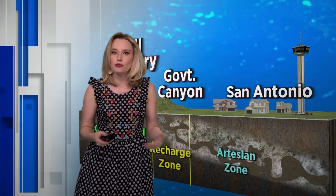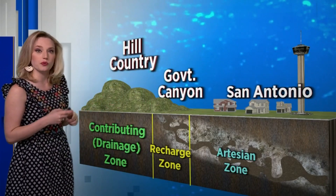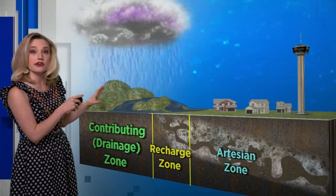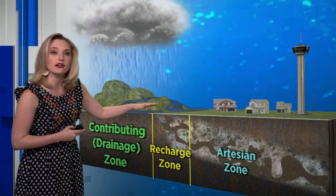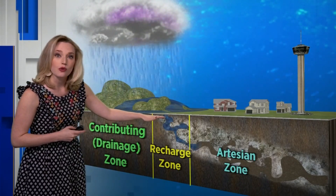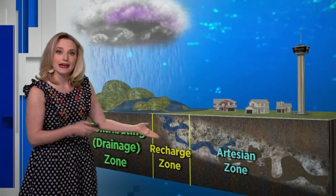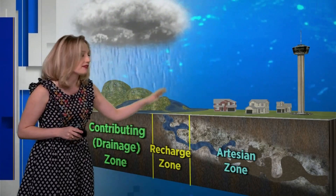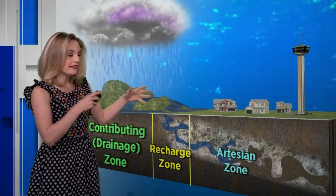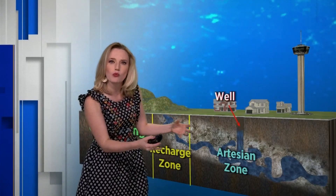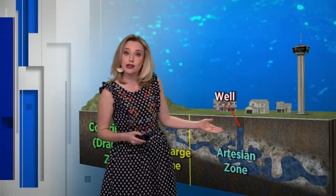The artesian zone is where we harvest the water through wells. Rain falls on the contributing zone in the Hill Country, and the water runs downhill into the recharge zone, where it enters the porous aquifer system. Similarly, rain can just simply fall on the recharge zone and immediately enter the aquifer. Then the pressure from all that water builds up in the artesian zone, and we harvest it by digging wells.